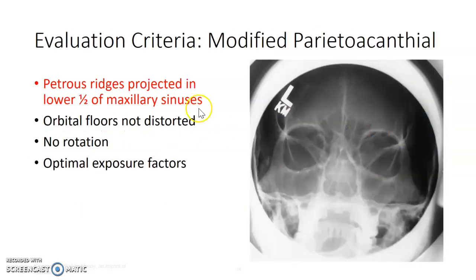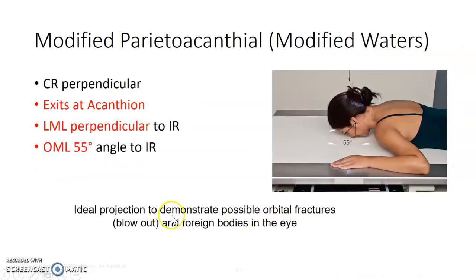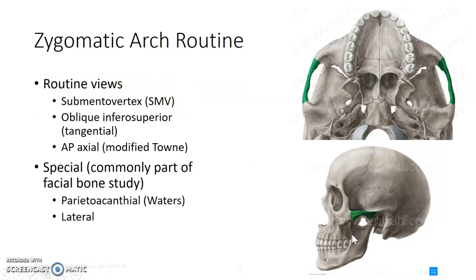On the modified Waters, the petrous ridges are at about the midpoint of the maxillary sinuses. Note this one — I've seen it on board reviews. It is the ideal projection for possible orbital blow-out fractures or foreign bodies in the eye.